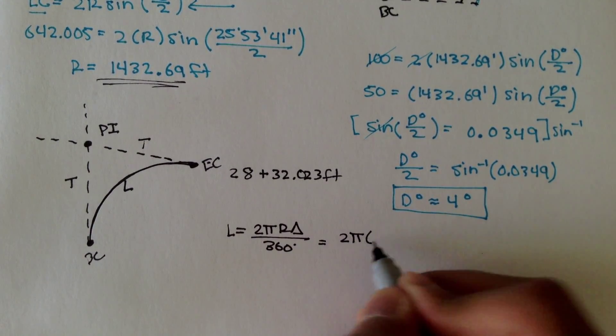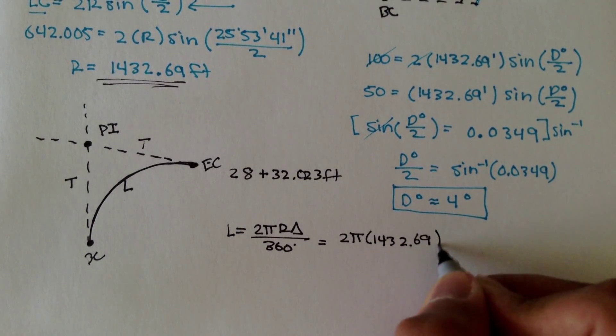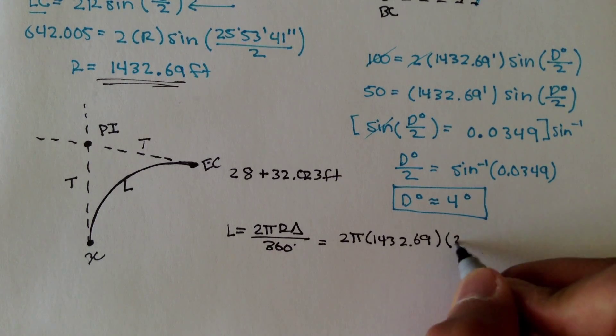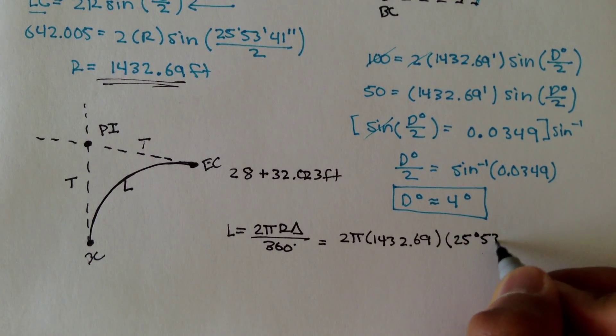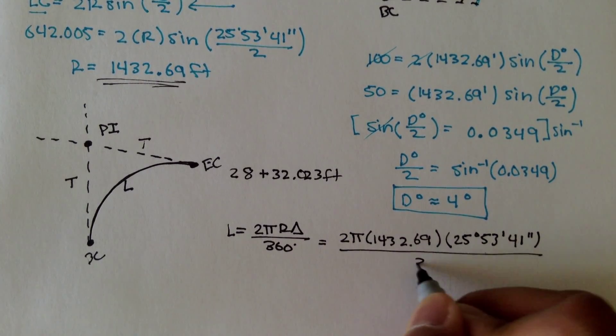So this is equal to 2π, the radius is 1432.69, and the interior angle is 25°53'41".